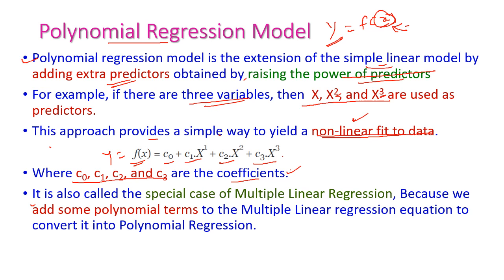It is also called a special case of the multiple linear regression model. In multiple linear regression, we add some polynomial terms, and then it is converted into a polynomial regression model. So, the polynomial regression model is an extension of both the simple linear regression model and the multiple linear regression model.